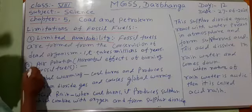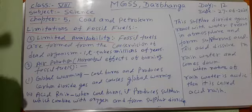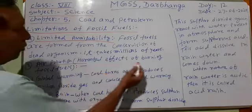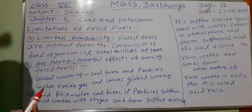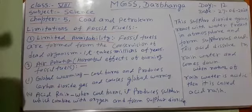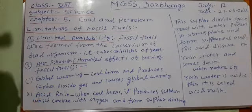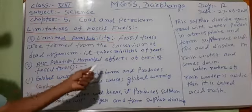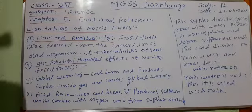The second limitation is air pollution. When fossil fuel burns, especially coal, it causes air pollution. This question may also be asked as: what are the harmful effects of burning fossil fuel or burning coal? The harmful effects are: first is global warming — this is very important — and second is acid rain. We shall discuss both global warming and acid rain one by one in detail.